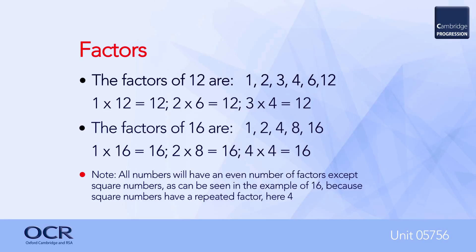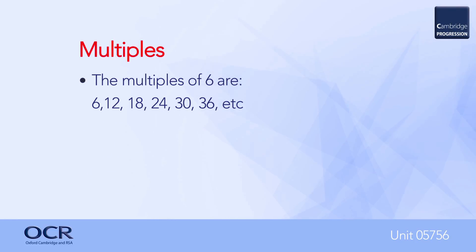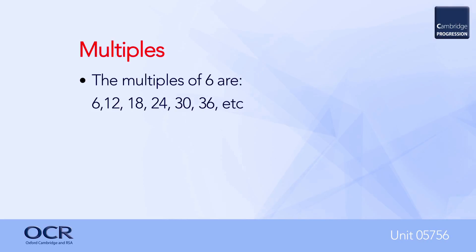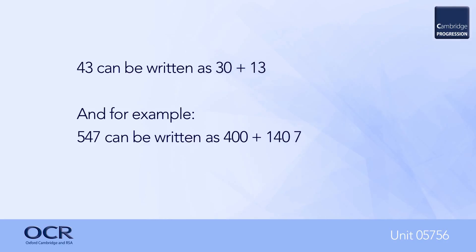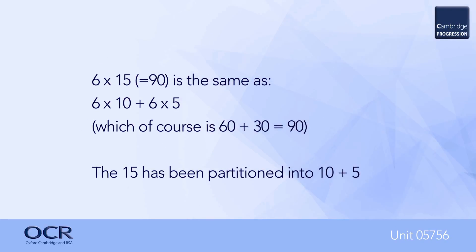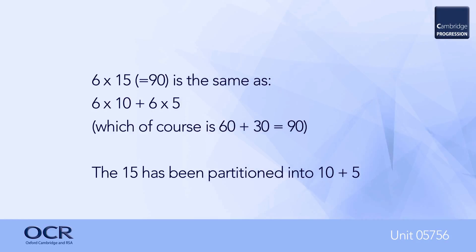Note that square numbers have an odd number of factors. Multiples of a number are those numbers that are in that number's times table — so the multiples of six are six, twelve, eighteen, twenty-four, etc., and the multiples of ten are ten, twenty, thirty, forty, etc. We looked at partitioning earlier in this unit. It is recognised that, for example, forty-three could be written as thirty plus thirteen. In the types of question encountered in this unit, learners are expected to recognise that, for example, six multiplied by fifteen equals ninety, which is the same as six multiplied by ten plus six multiplied by five, equal to sixty plus thirty, which equals ninety. The fifteen has been partitioned into ten plus five.